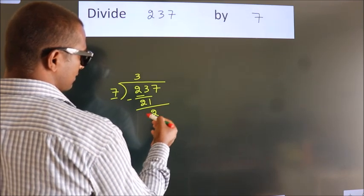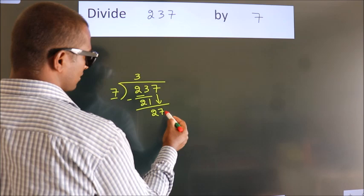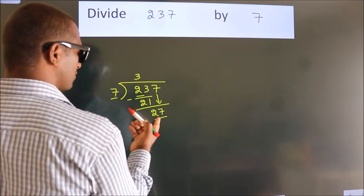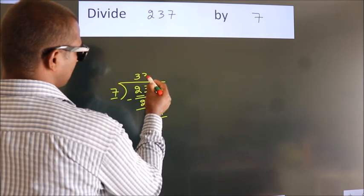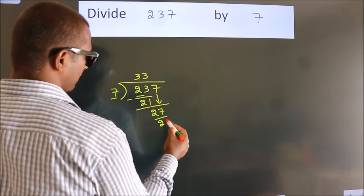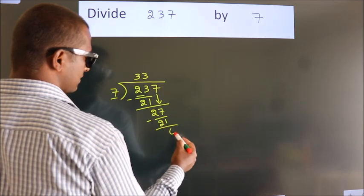After this bring down the beside number. So 7 down. So 27. A number close to 27 in the 7 table is 7 threes, 21. Now we subtract. We get 6.